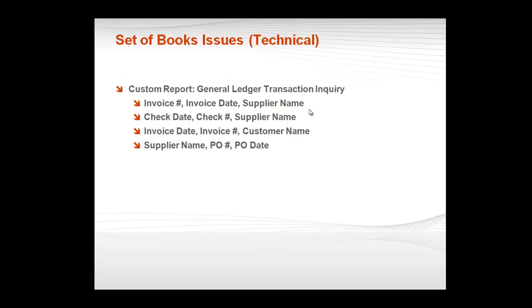My favorite issue from a technical standpoint is one that I love to hate — it was what I called the Glitter Report, the General Ledger Transaction Inquiry Report. Many places I went to as a consultant, I was asked to create a report for the accountants that they could run from the General Ledger listing all detail that came into the General Ledger. The catch was they posted to the General Ledger in summary. In addition, based on the type of transaction, the description they wanted to be different — for an AP invoice the description needed to be the invoice number, invoice date, and supplier name, but for a check they wanted the check date first, then check number and supplier name. So there was no consistency.